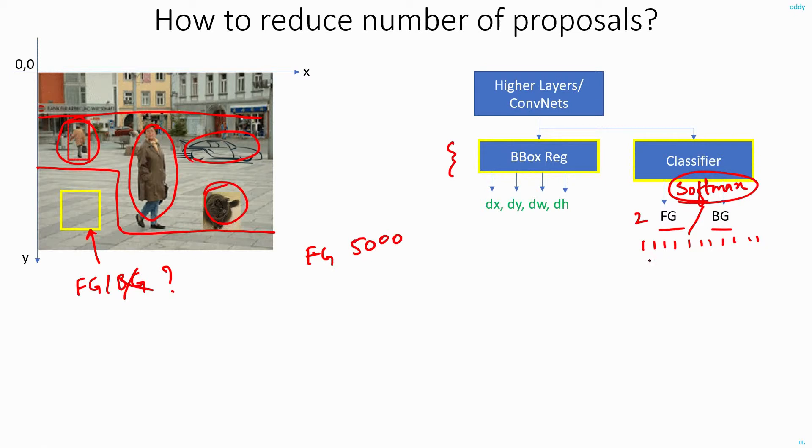For example, if this is the sliding window position, then most probably the scores for foreground and background will be 0.5 each. But at the same time, if this is the sliding window position, then the score for foreground might be 0.8 and for the background might be 0.2.